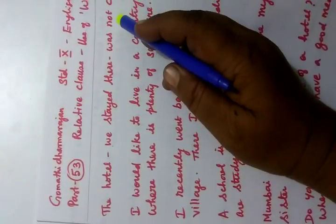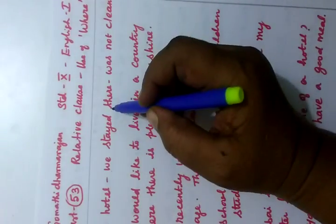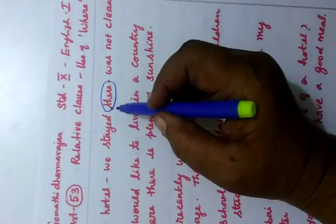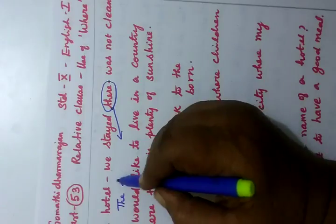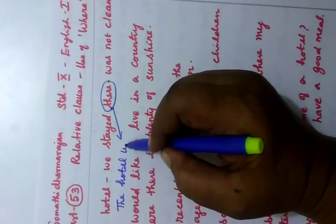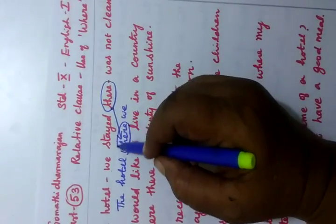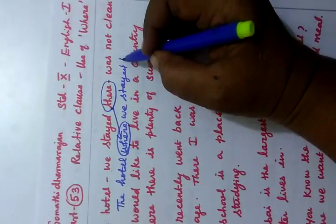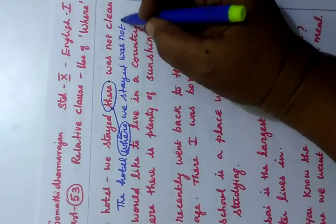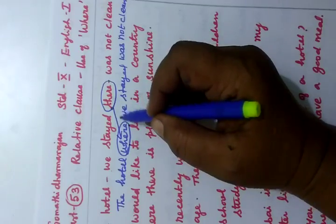The hotel we stayed there was not clean. You see the 'there' — we are going to write 'where' instead. So: 'The hotel where we stayed was not clean.' The word 'there' is replaced by 'where' because it refers to a place.